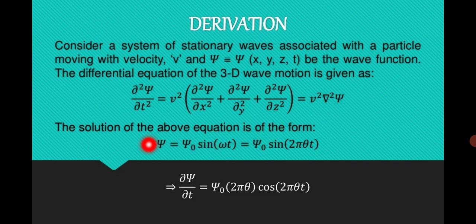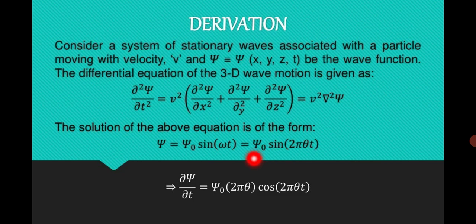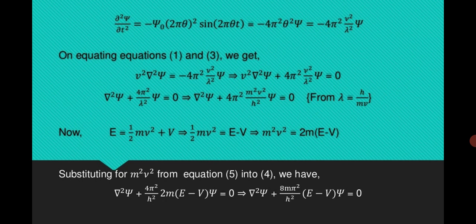The solution of the above equation is of the form: ψ = ψ₀ sin(ωt), where ω is the angular frequency, so ψ = ψ₀ sin(2πνt). If we differentiate it, we get ψ₀·2πν·cos(νt). Differentiating again to get ∂²ψ/∂t², we ultimately obtain −4π²ν²/λ² · ψ.